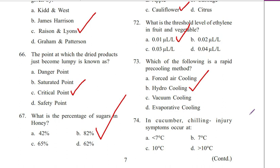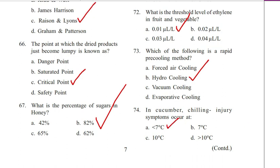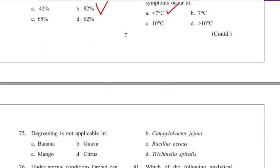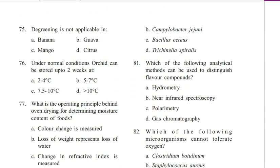Question 74. In cucumber, chilling injury symptoms occur at: less than 7°C, 7°C, 10°C, or greater than 10°C. Answer is A. Less than 7 degrees Celsius.